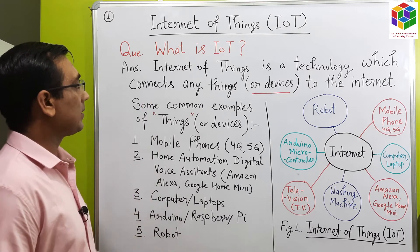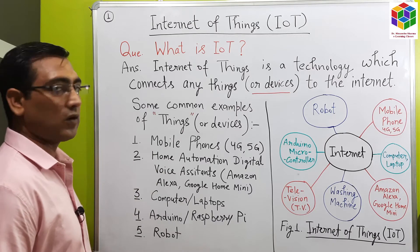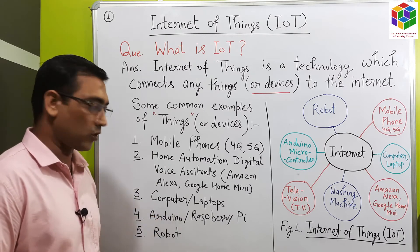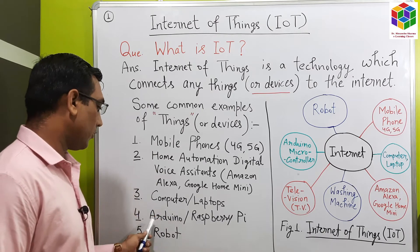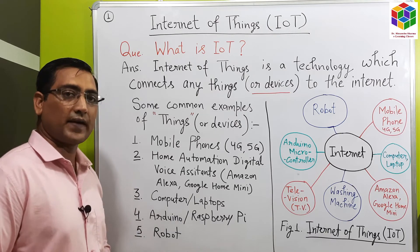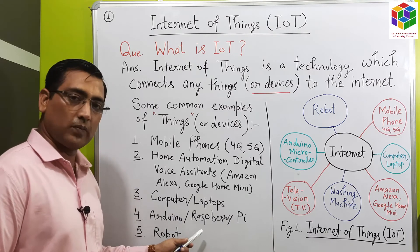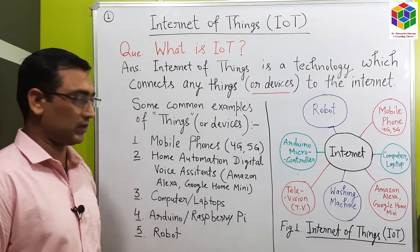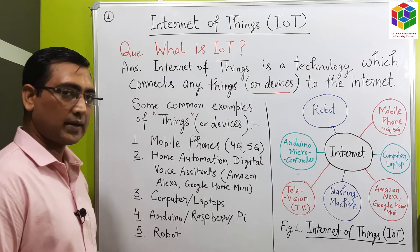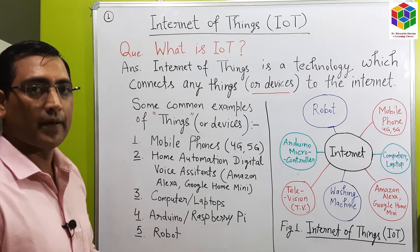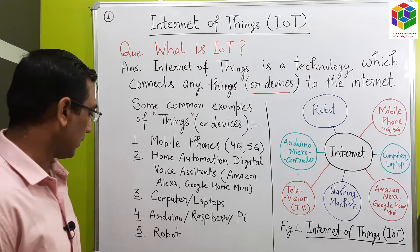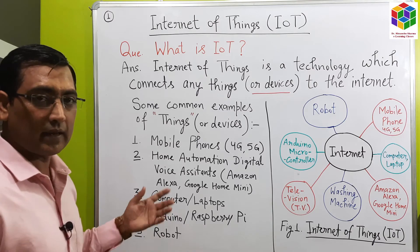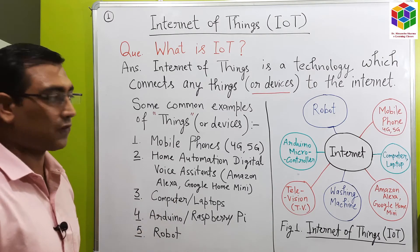Number three, the third example of IoT devices is computers or laptops. The fourth example of IoT devices is Arduino board or Raspberry Pi board. They are basically embedded systems consisting of a microcontroller. Then there are robots. There are so many examples of IoT devices.